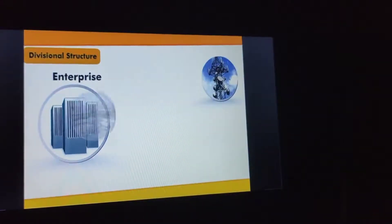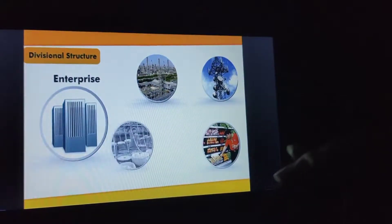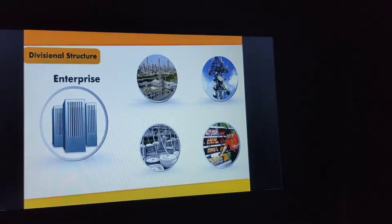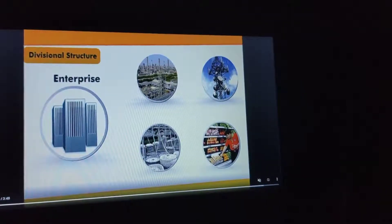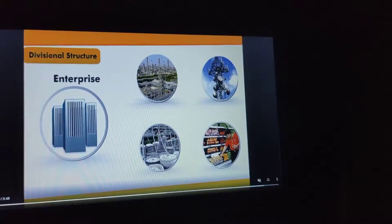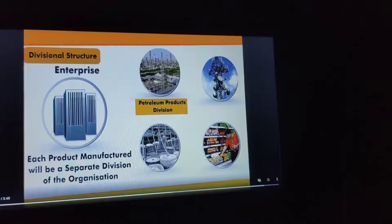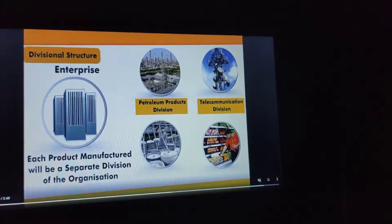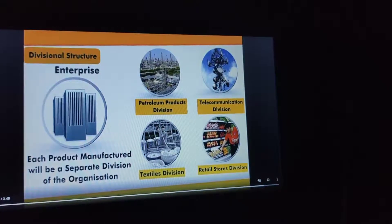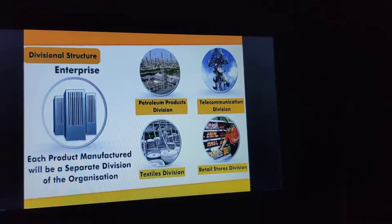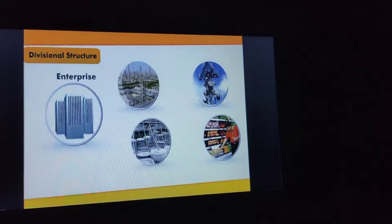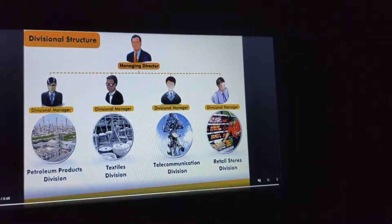The second type is divisional structure. Divisional structure is suitable for those enterprises which are engaged in producing different product lines. Each product manufactured will be a separate division of the organization. For example: a petroleum product division, telecommunication division, textile division, and retail stores division. The firm is engaged in various business product lines, so here a divisional structure is required.